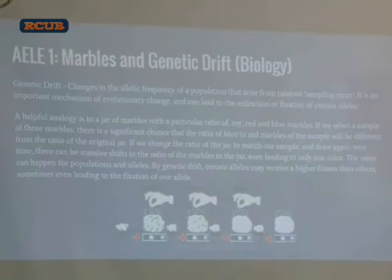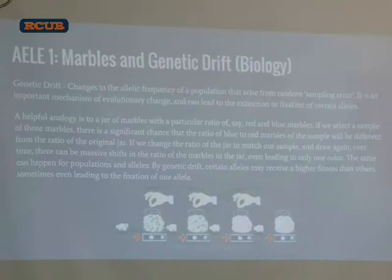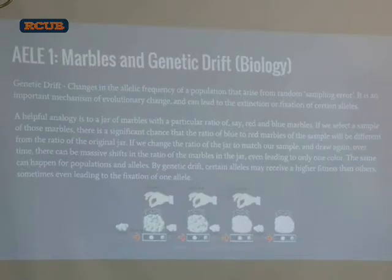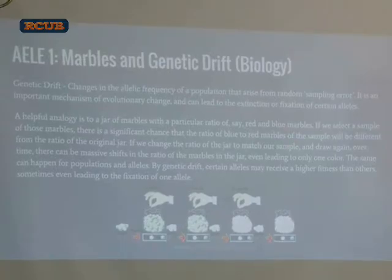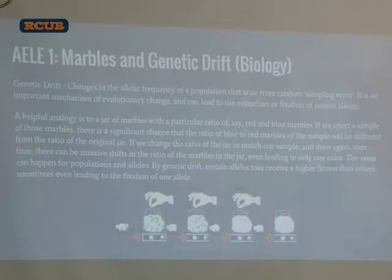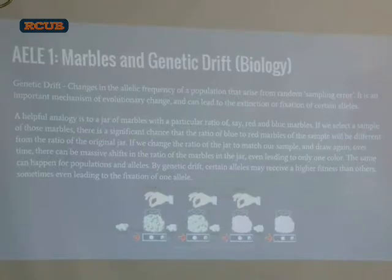I'm going to go through these four examples, one from each discipline. Each of these experiments I either did in my own undergraduate education or was somehow involved in — which is a fun thing in the background. The first example is from biology. Genetic drift is an important mechanism of evolutionary change: changes in the allelic frequency of some population happen for no other reason than random chance, random sampling error — not natural selection or sexual selection, just random chance.